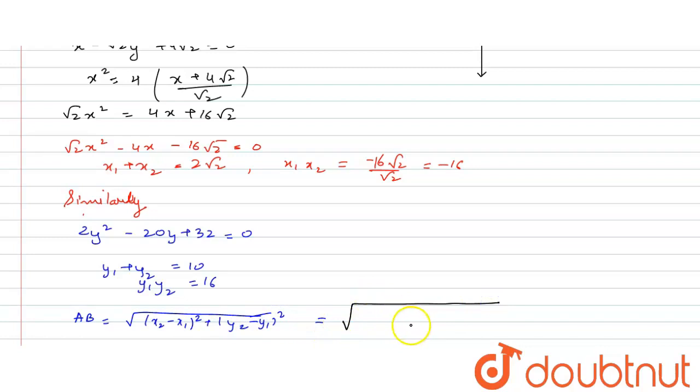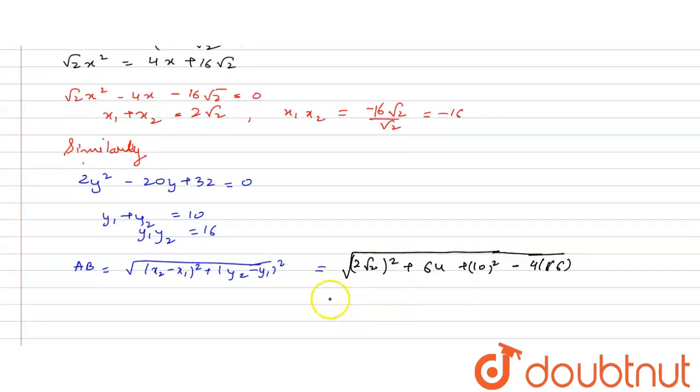So this will be (2√2)² plus 64 plus 10² minus 4 into 16. So we will have 8 plus 64 plus 100 minus 64.